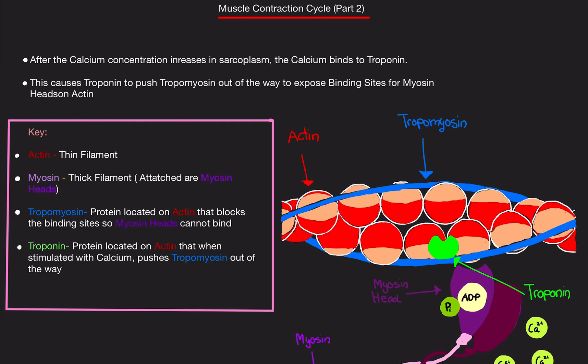In the last video we went over part one. Just a brief overview: we went over that there's a neuron that secretes acetylcholine, which binds to acetylcholine receptors on a muscle cell. This causes a sodium influx, which generates an action potential. This causes DHP receptors to basically pull on something called ryanodine receptors located on the sarcoplasmic reticulum, which is like the endoplasmic reticulum but for a muscle cell. When this happens, calcium is released from the SR.